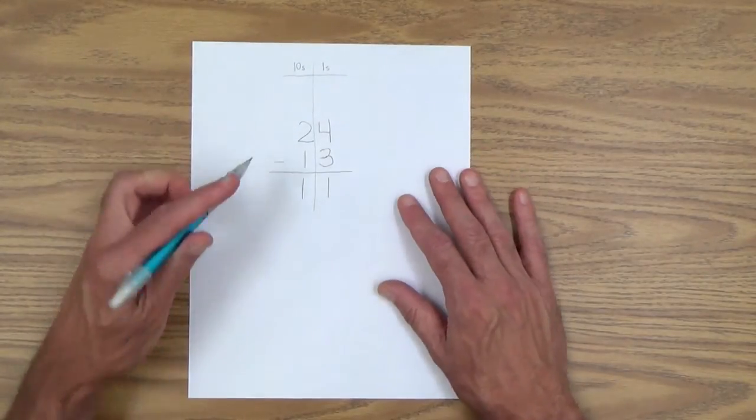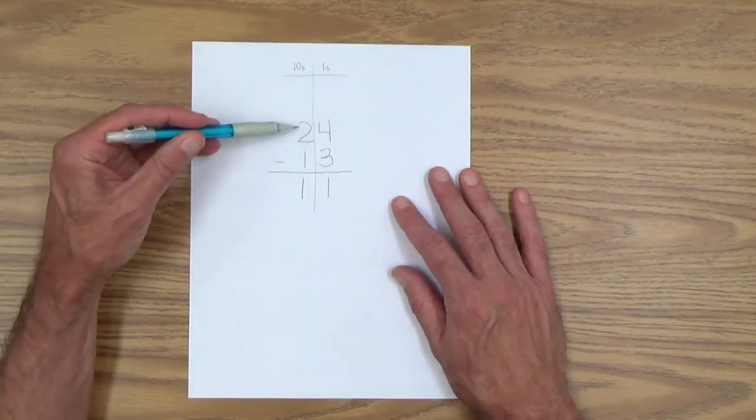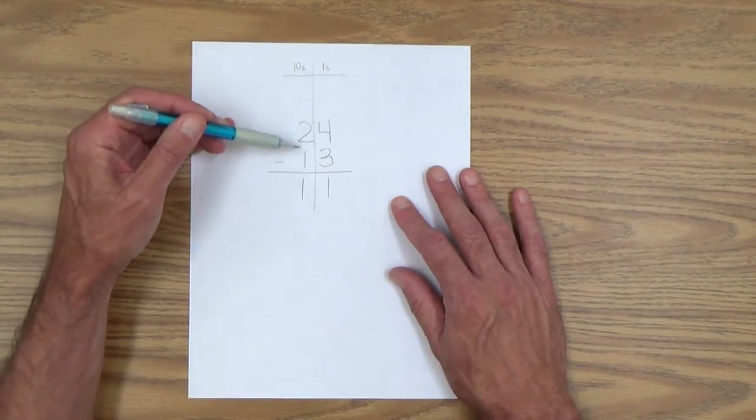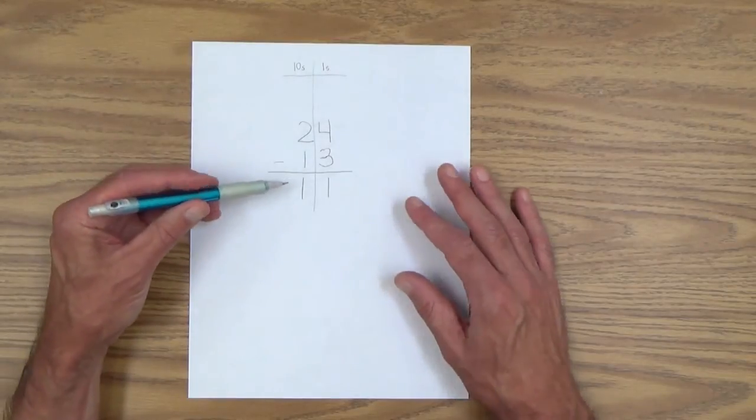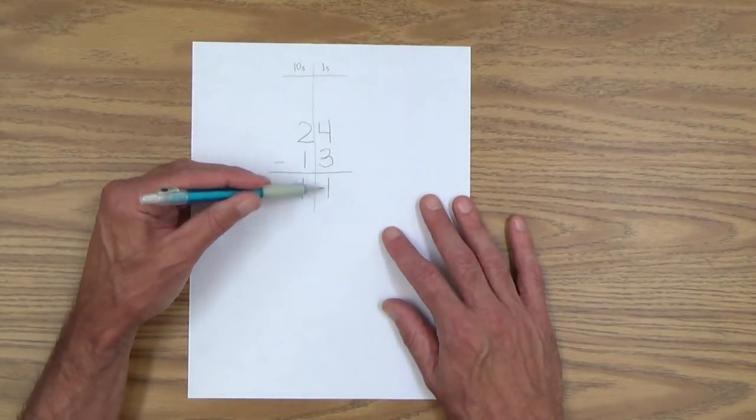And of course, you want to emphasize again, say, look, now we're subtracting tens over here. We're subtracting ones. And the answer is 11.